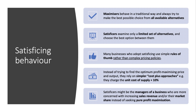Maximisers behave in the traditional textbook way. They're looking to use all the information, consider all the alternatives and the costs and benefits, and choose a profit maximising price. We know that doesn't happen. Satisficers don't examine every alternative — they examine a limited set of choices and then choose the best option between them.